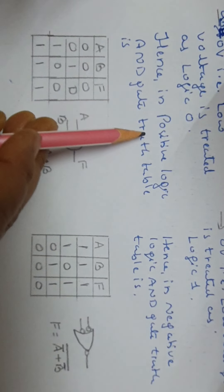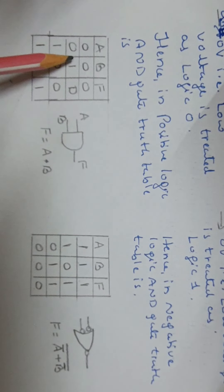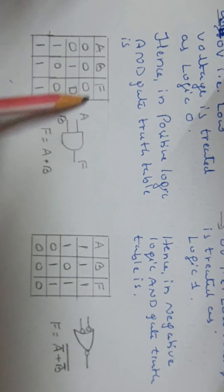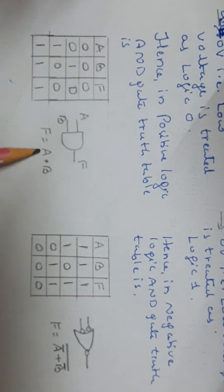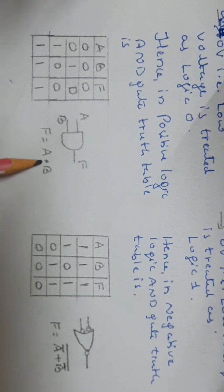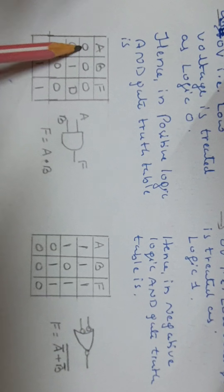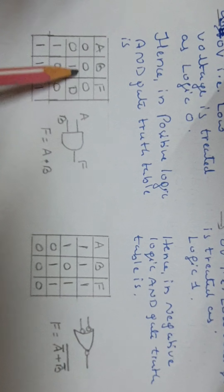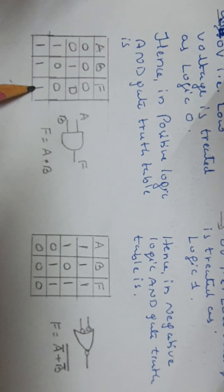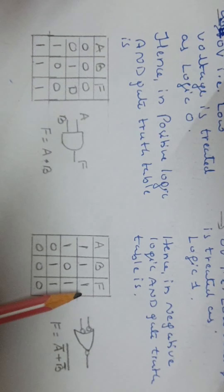Next we shall consider AND gate in positive logic and in negative logic. This is the truth table of AND gate in positive logic. A and B are the inputs, F is the output. This is the logic symbol of AND gate in positive logic. The Boolean equation is F equal to A AND B. In the truth table, when both inputs are low the output is low; when any one is 0 the output is 0.